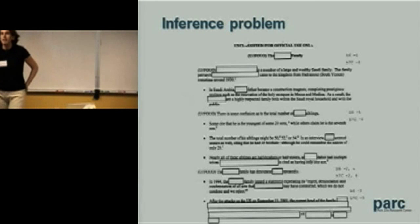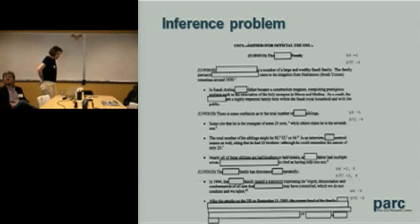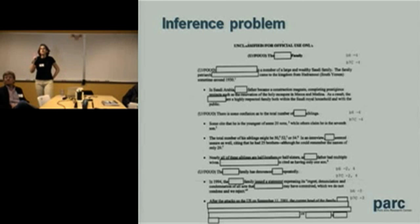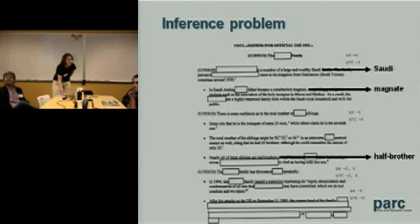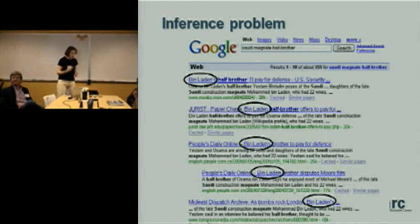Starting with a couple of examples. This is an FBI document that's been declassified, and in the process of declassifying it, certain information has been redacted. If you look at it quickly, you can't immediately tell who it's about — it's the redacted family. But there's a lot of other information there. We can extract keywords like 'Saudi,' 'magnet,' 'half-brother.' If we enter these into Google, at least at the time we took this screenshot, the first page is all about Finland.